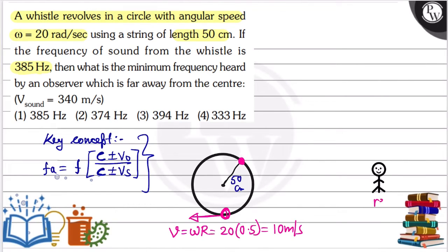The observer is at rest, so we can apply the Doppler effect. The apparent frequency formula is: actual frequency times c plus minus velocity of observer, divided by c plus minus velocity of source. The actual frequency is 385 Hz. c is the speed of sound in air, which is 340 m/s.